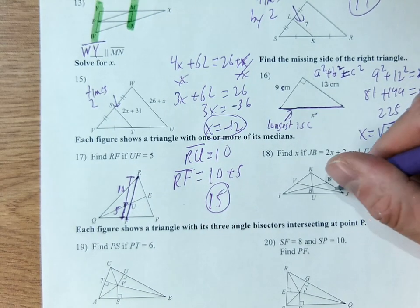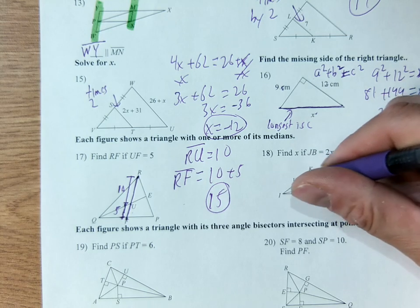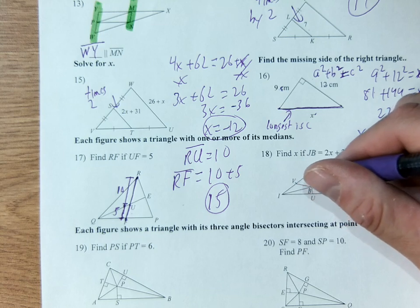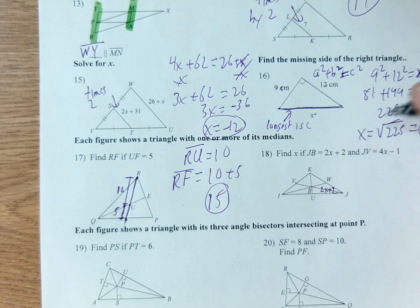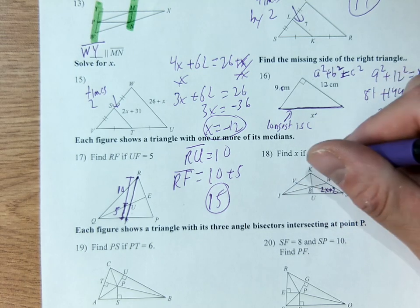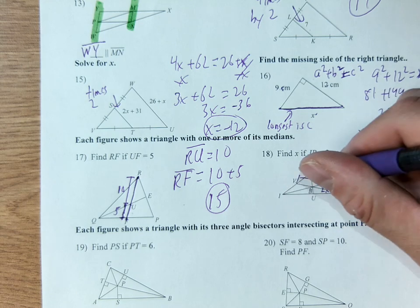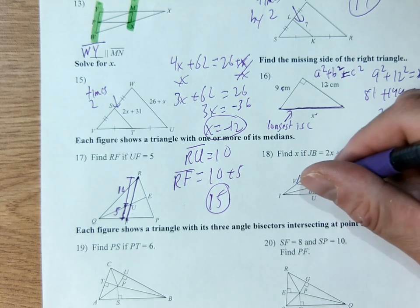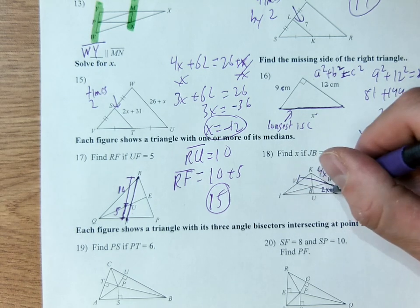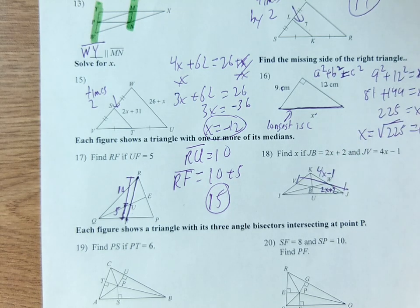Let's look at the next question. JB is here, it's 2x plus 2. JV is here. So it's the same type of setup. So I have here 2x plus 2 as JB. 4x minus 1 as JV, which is the whole length from here to here.